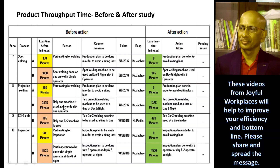The production plan now includes 2 projection welding machines and 2 CO2 welding machines. For inspection, where parts were waiting, the inspection plan is to be done with two operators in the daytime and two operators at night time. This is one example of a very simple initial stage throughput improvement.